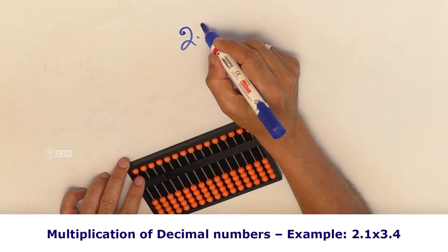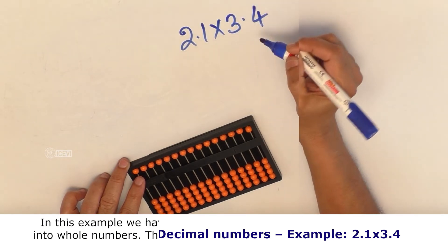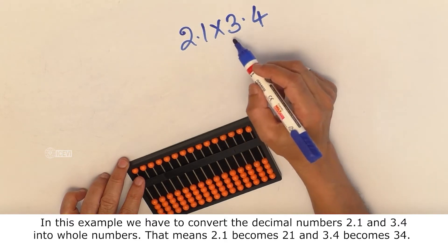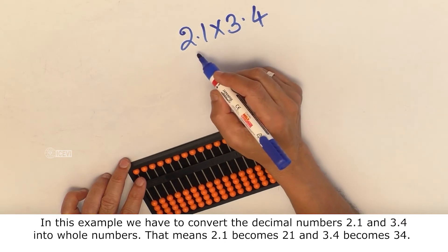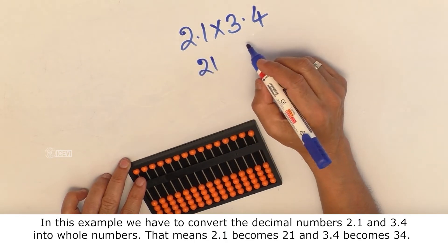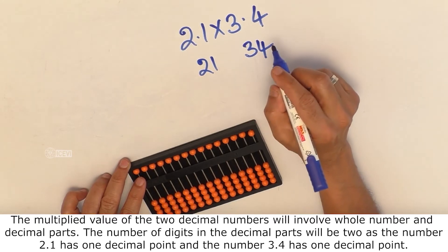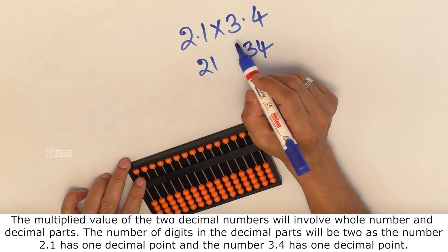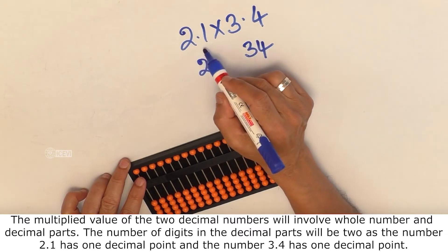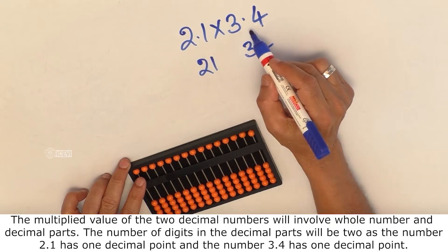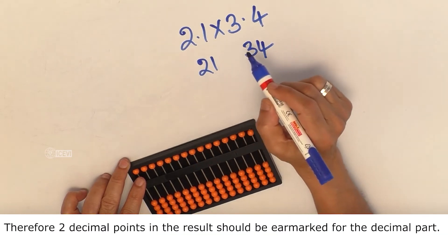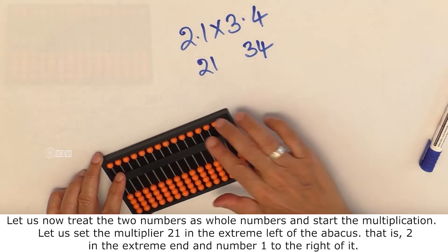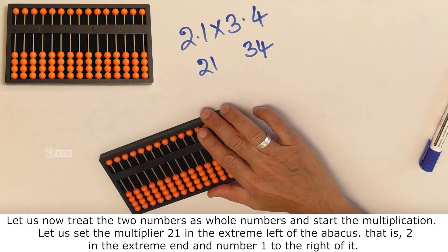Example: 2.1 multiplied by 3.4. In this example, we have to convert the decimal numbers 2.1 and 3.4 into whole numbers. That means 2.1 becomes 21 and 3.4 becomes 34. The multiplied value of the two decimal numbers will involve whole numbers and decimal parts. The number of digits in the decimal part will be 2, as 2.1 has one decimal place and 3.4 has one decimal place. Therefore, two decimal points in the result should be earmarked for the decimal part. Now, let us treat the two numbers as whole numbers and start the multiplication.